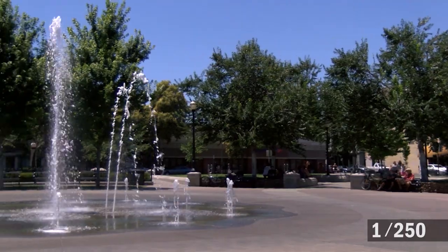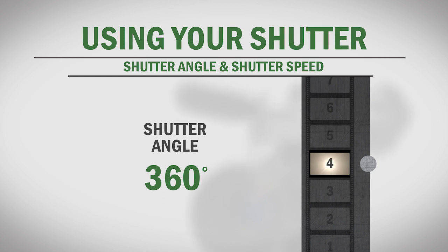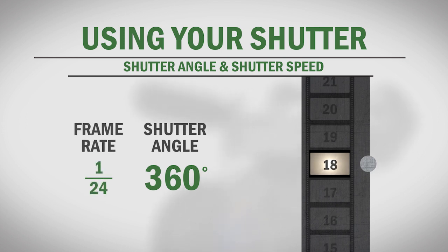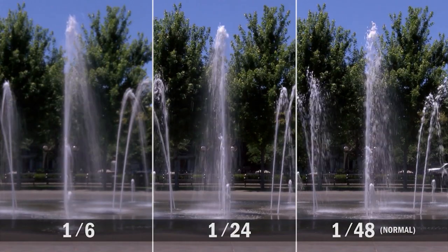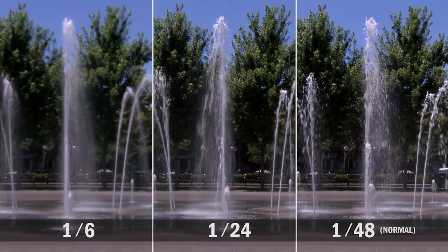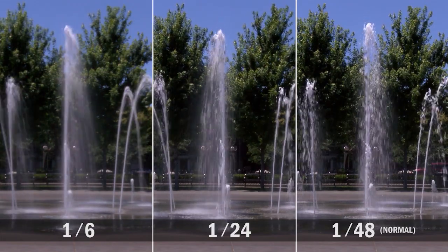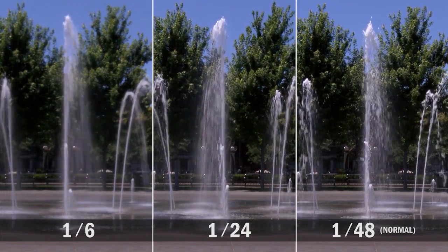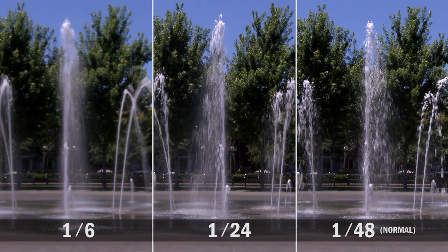Now what happens if we use a larger shutter angle or a slower shutter speed? Let's say we could keep our shutter completely open for the entire length of each frame. While mechanically this might be impossible, electronic shutters can achieve this. A 360-degree shutter would expose each frame for 1/24th of a second if we were shooting 24 frames per second, and 1/24th would be the equivalent shutter speed. Here's our fountain shot with various shutter speeds below normal. Notice that as our shutter gets progressively slower, each droplet of water has more motion blur. We'll freeze our shots to really show the difference.